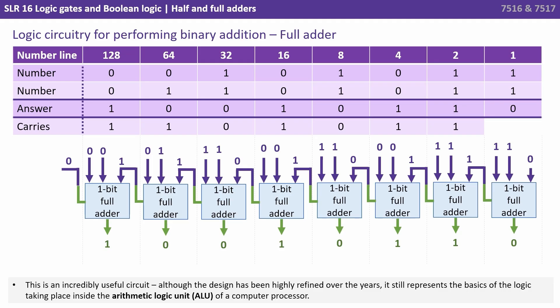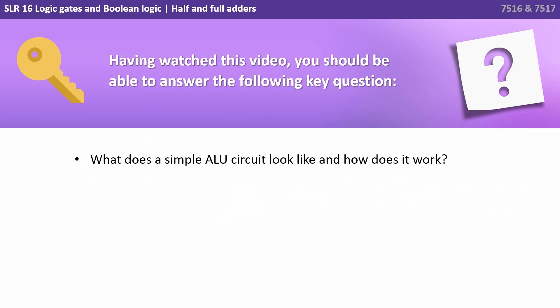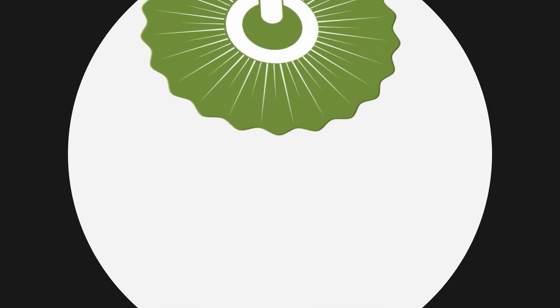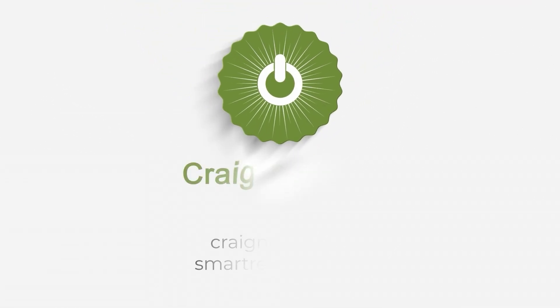This is an incredibly useful circuit. Although the design has been highly refined over the years, it still represents the basics of the logic taking place inside the arithmetic logic unit of a computer processor. Having watched this video, you should be able to answer the following key question. What does a simple ALU circuit look like and how does it work?